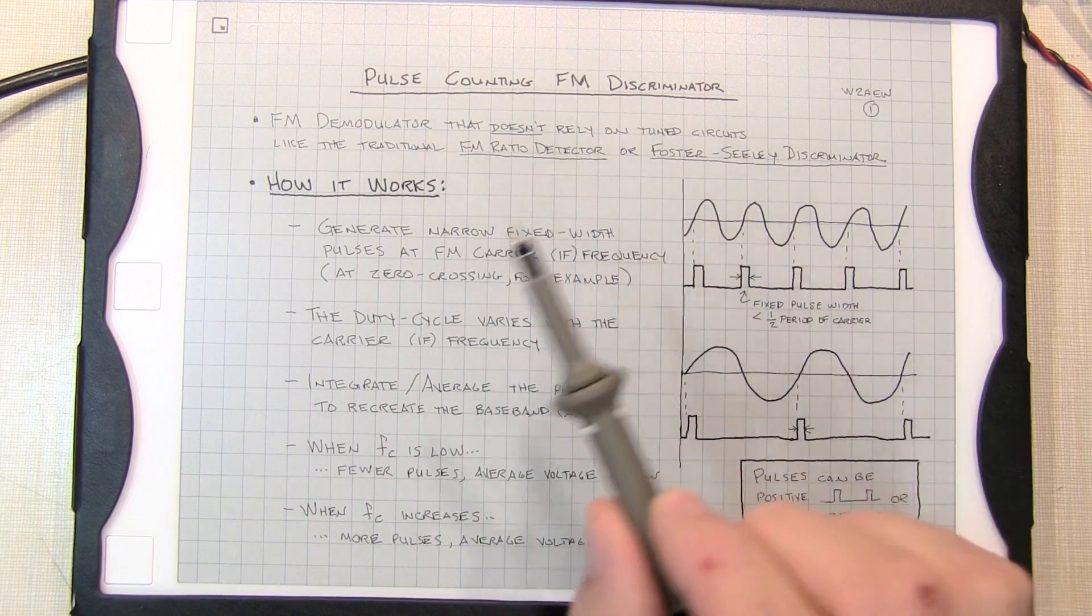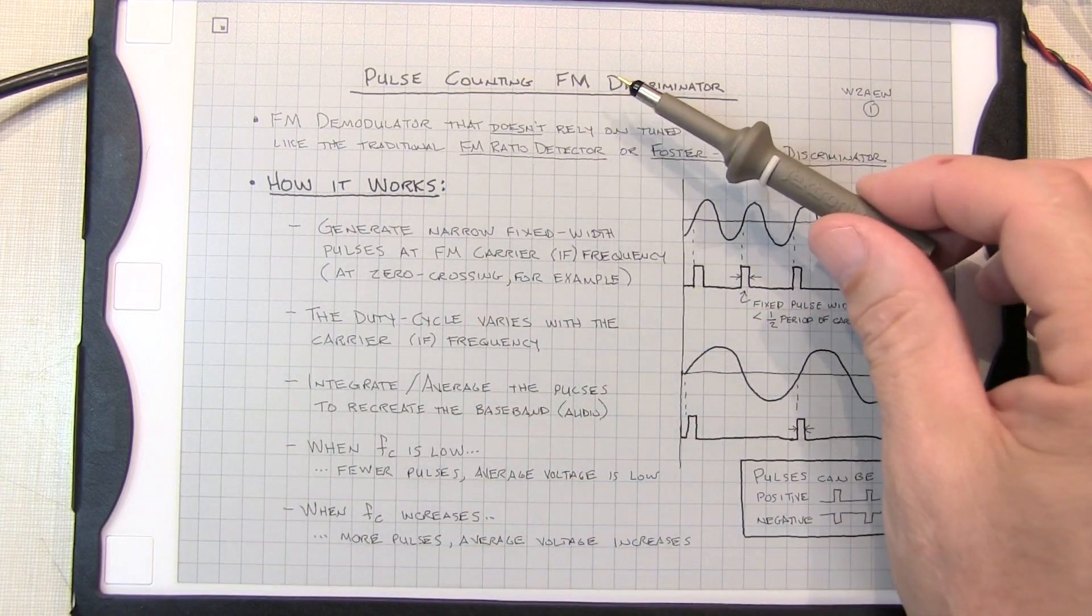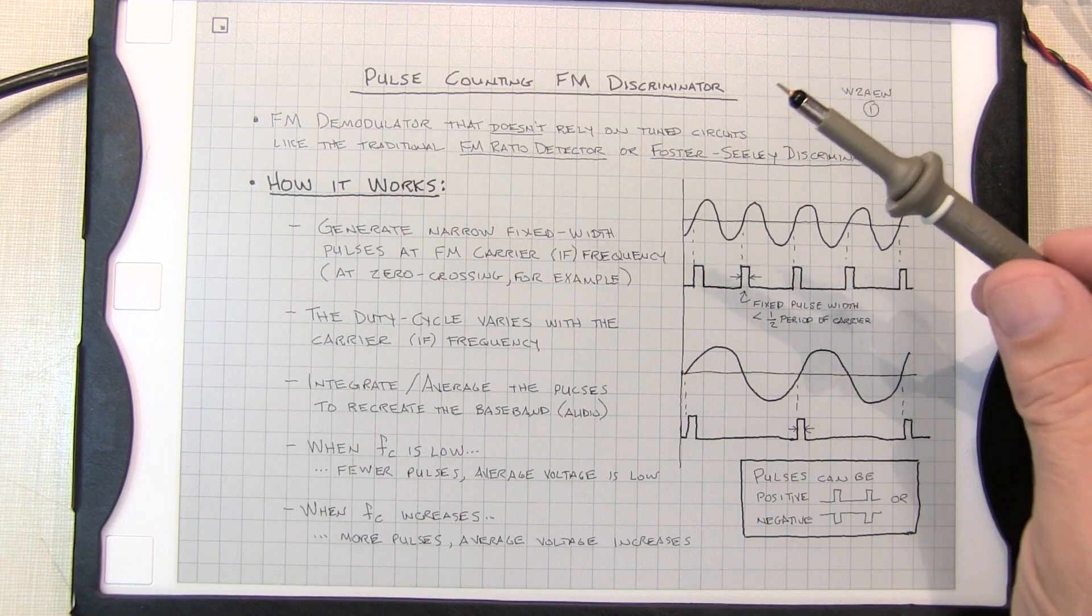Now the name pulse counting FM discriminator is a little misleading because we're not really counting pulses as much as integrating them.